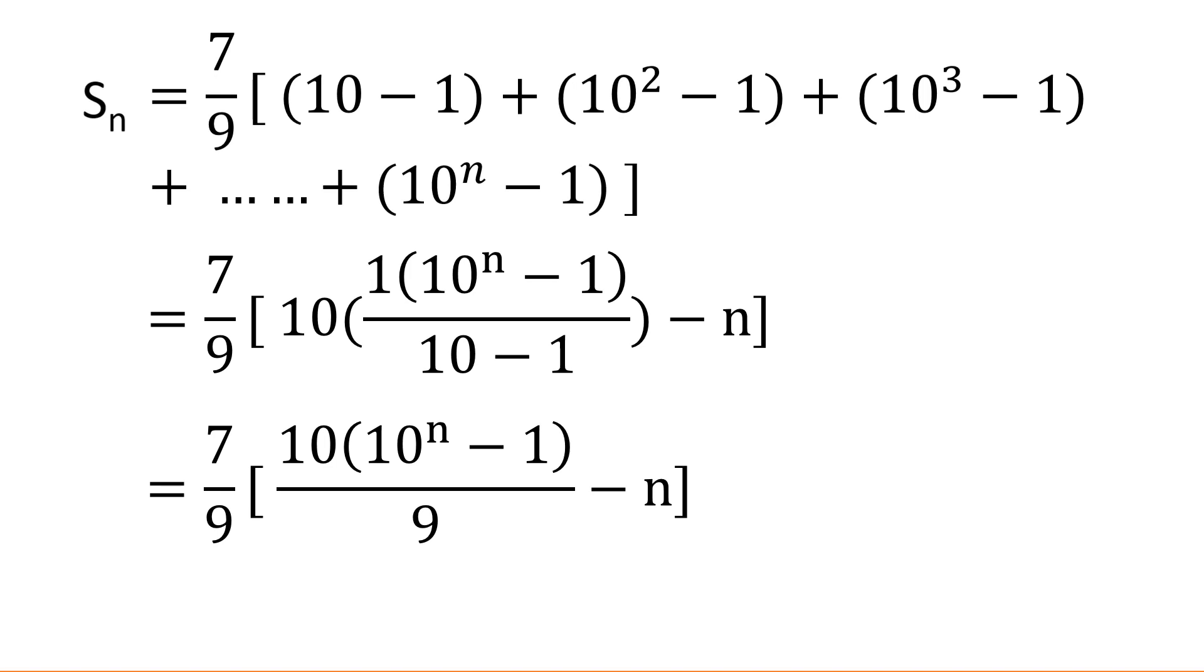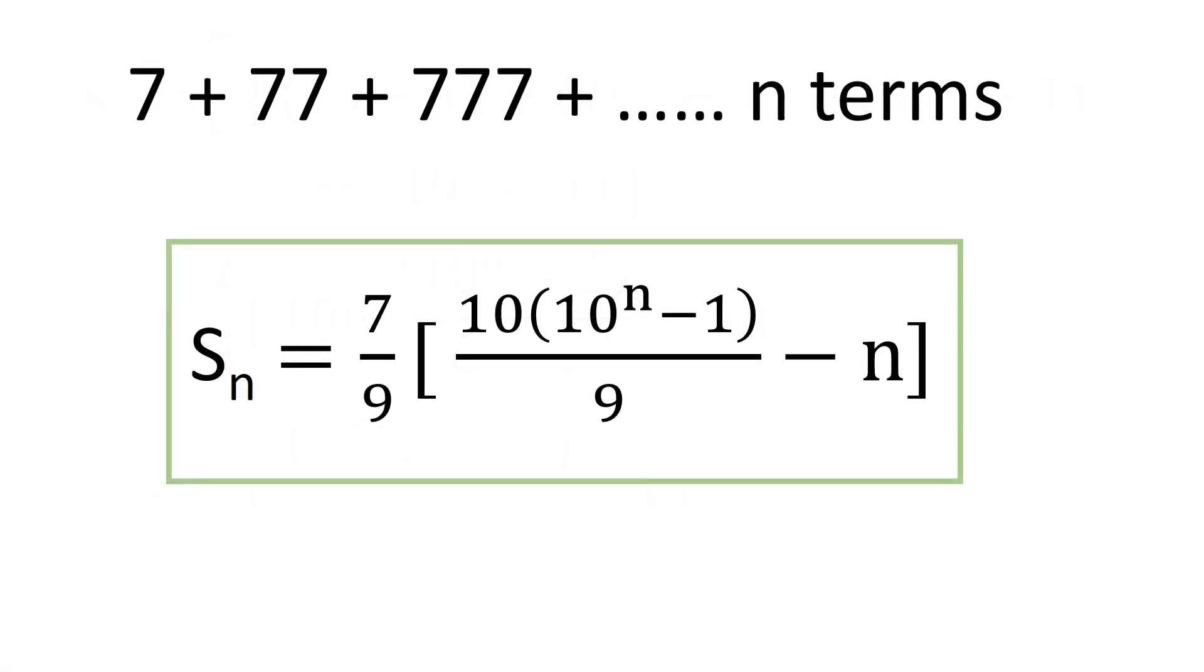Simplifying it further, we arrive to the required result. So this is how we can obtain the sum of 7 plus 77 and so on up to n terms, where the nth term contains n sevens.